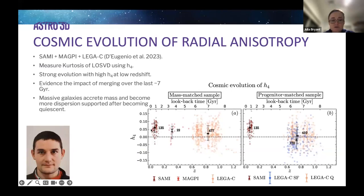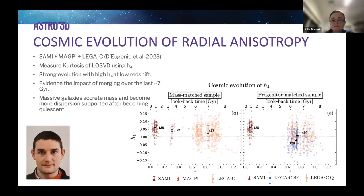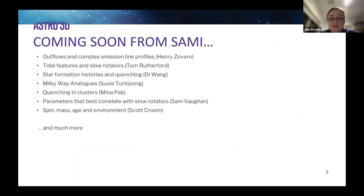This had not been seen before. He then discusses evidence that this comes from the impact of merging over the last seven gigayears — in particular, massive galaxies accreting mass and becoming more dispersion-supported after becoming quiescent. The key benefits here are cross-pollination of different surveys and different wavelength bands, but in this case different redshifts.